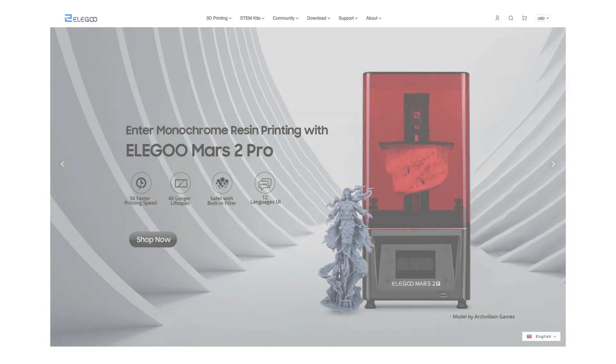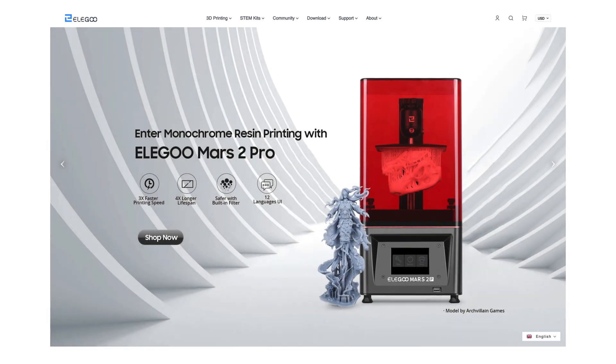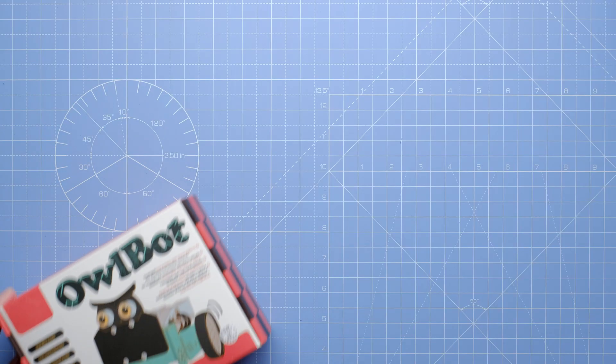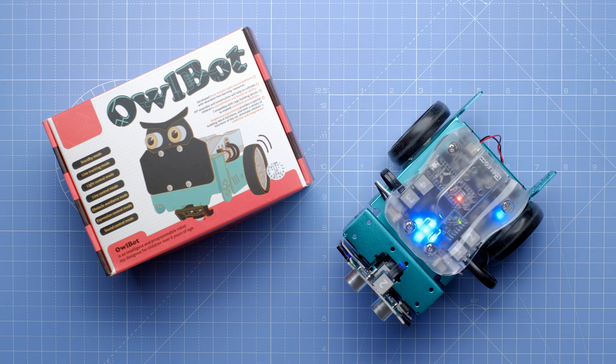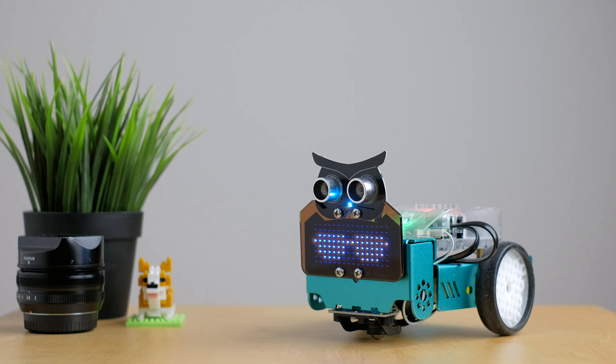You may have heard of the company Elegoo who makes 3D printers, but did you know they also make Arduino-based educational toys for people to learn about programming and mechanical engineering? It might look like a toy with its cute little face and design, but there's a lot more to it.